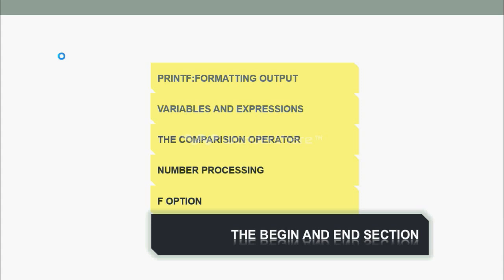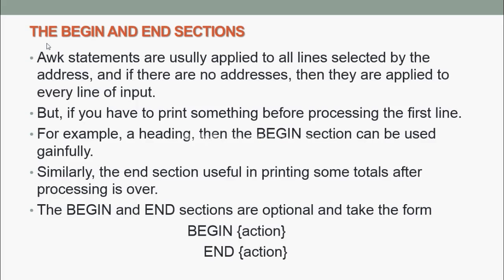Next, we are going to see the BEGIN and END section. AWK statements are usually applied to all lines selected by the address. If there are no addresses, then they are applied to every line of input. But if you have to print something before processing the first line, for example a heading, then the BEGIN section can be used gainfully. Similarly, the END section is useful in printing totals after processing is over. The BEGIN and END sections are optional and take the form: BEGIN {action} and END {action}.